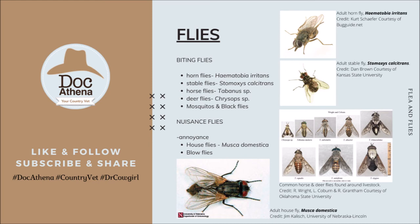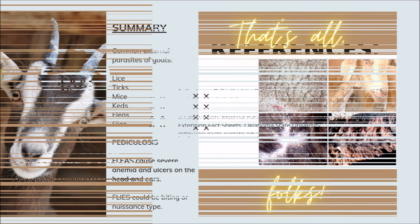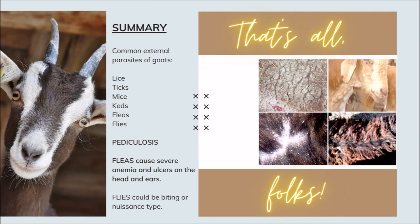That's all for flies. For references, I would like to thank Kaufman, Culler, and Butler for the external parasites of sheep and goats from the University of Florida, as well as Justin Tully from the Oklahoma Cooperative Extension Fact Sheets from Oklahoma State University. For summary, the most common external parasites of goats include lice and ticks discussed in Part 1, keds and mites in Part 2, and for Part 3 we focused on fleas and flies.